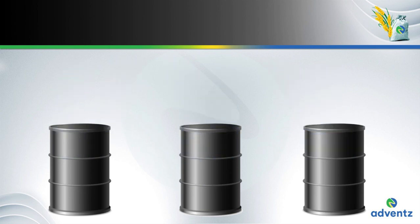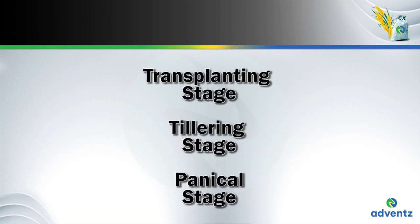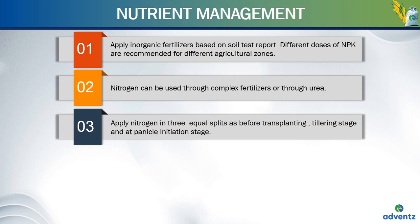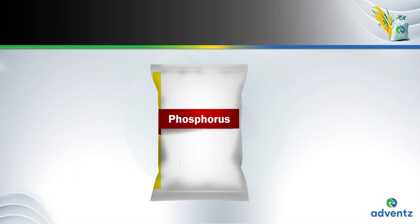The three splits are applied each at transplanting stage, tillering stage and at panicle initiation stage. First is transplanting, second is tillering and the third is panicle initiation. We apply nitrogen in three equal splits. We apply phosphorus before transplanting.